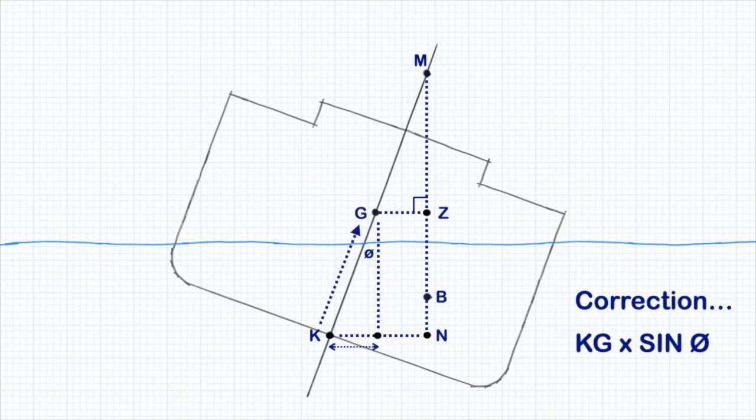The correction will always be subtracted from the KN value because the center of gravity can't go any lower than the keel.